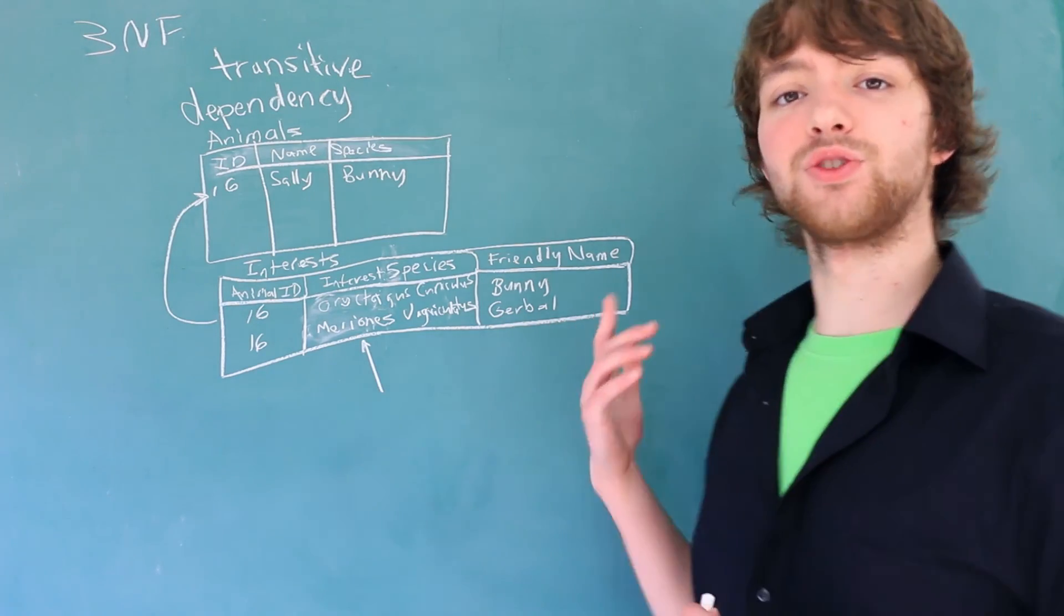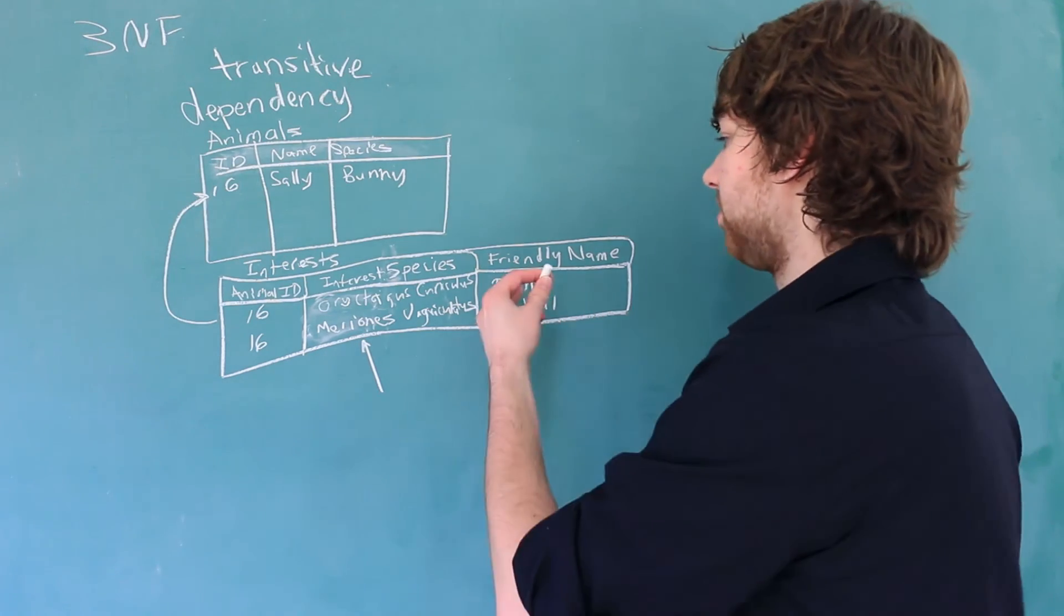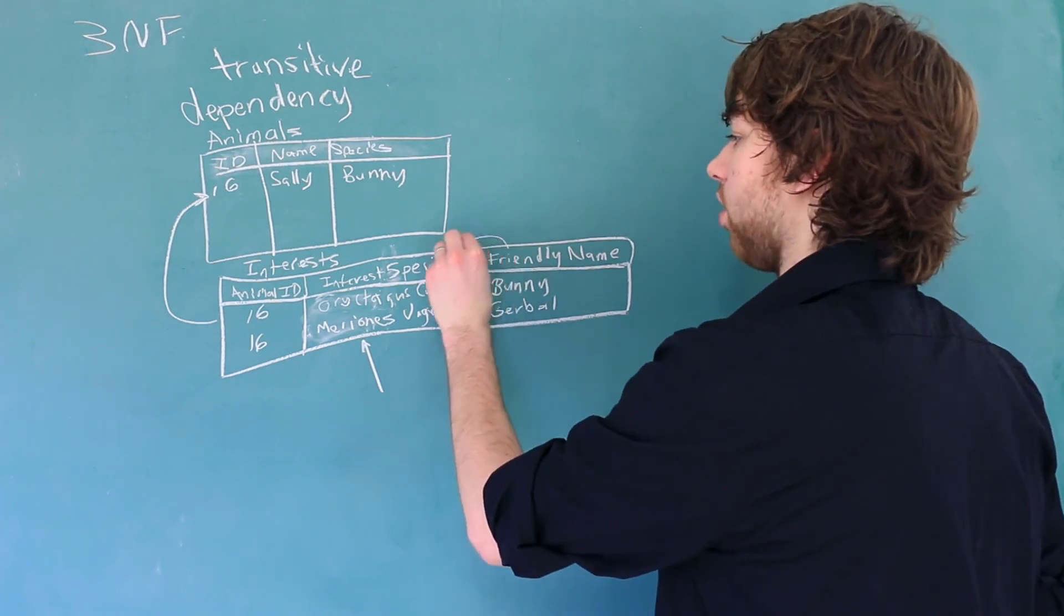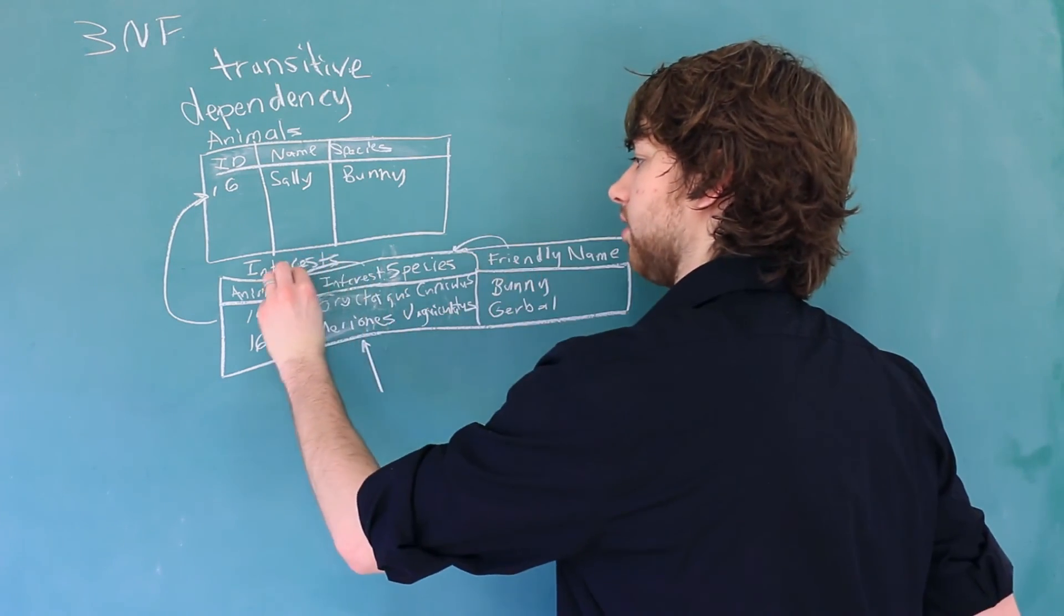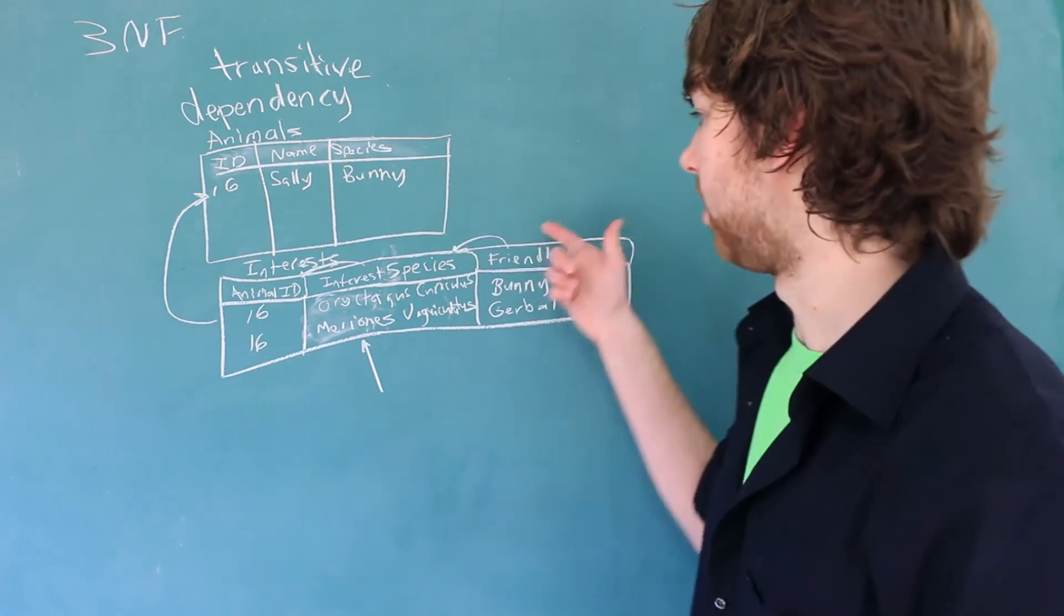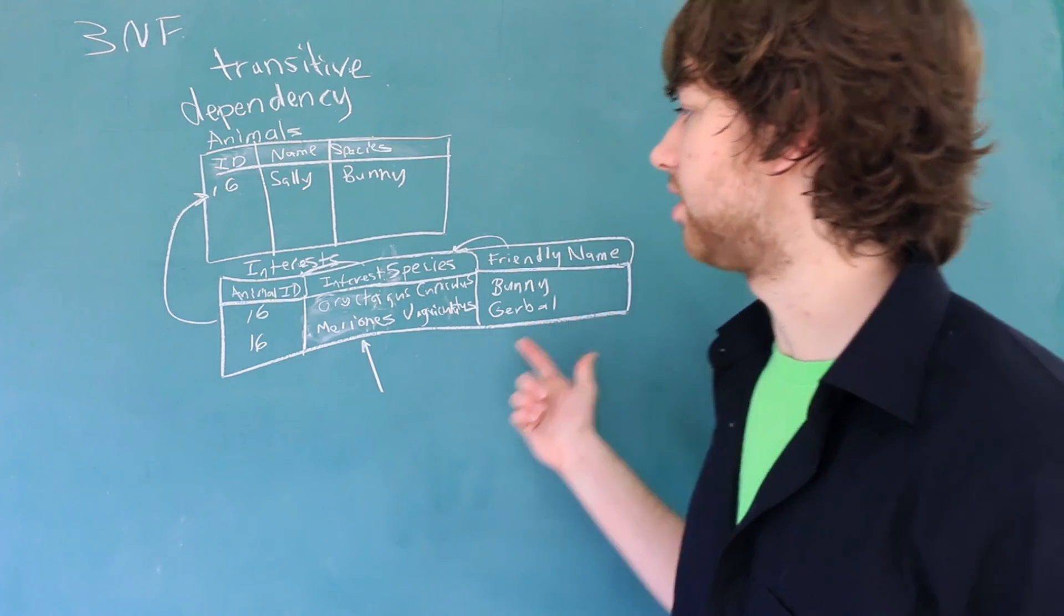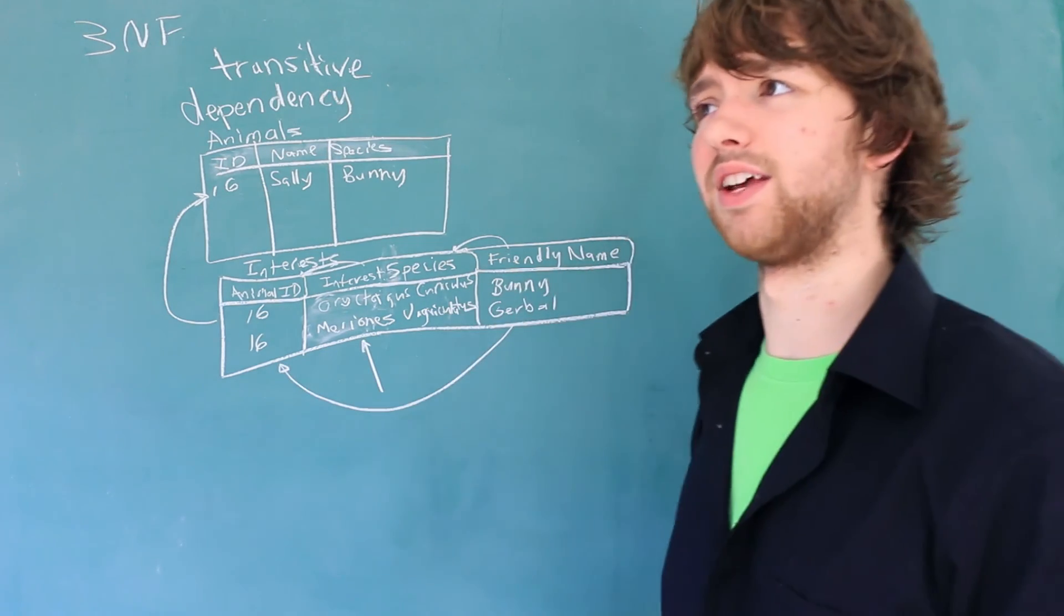This is where we introduced a problem, though. That's because there's a transitive dependency in this table. This friendly name actually depends on the interest, and the interest depends on the animal ID. So you can see there's like two dependencies in a row. And by this, the friendly name still depends on the animal ID.